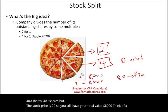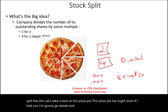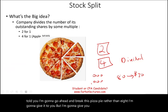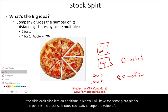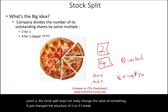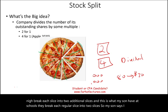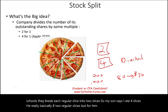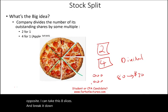Think of a stock split like this — take a look at a pizza pie with eight slices. If I told you I'm going to break this pizza pie into 16 slices by breaking each slice into an additional slice, you'll have the same pizza pie. The stock split does not really change the value of something; it just changes the structure of it. It's like at school where they break each regular slice into two slices, so my son says he ate four slices — he really ate two regular slices. You can also break 16 into 32, or do the opposite: take eight slices and break it down into only four pieces.